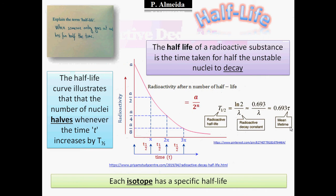Now, what is half-life? The half-life of a radioactive substance is the time taken for half of the unstable nuclei — or parent nuclei — to decay. Looking at the curve: I start with a number A. After a time T½ (the half-life time), that number decreases to A/2. If I wait another half-life, A/2 decreases by half to A/4. That's the definition of half-life.